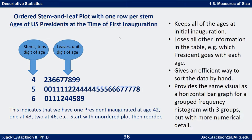We can also do more than one line per stem. You could break the 40s into lower 40s and upper 40s — break it halfway, so 40, 41, 42, 43, 44 would be together on one line, and 45, 46, 47, 48, and 49 would be on the other line. Since we have 10 digits, dividing by 2 gives 5 possible digits per line.